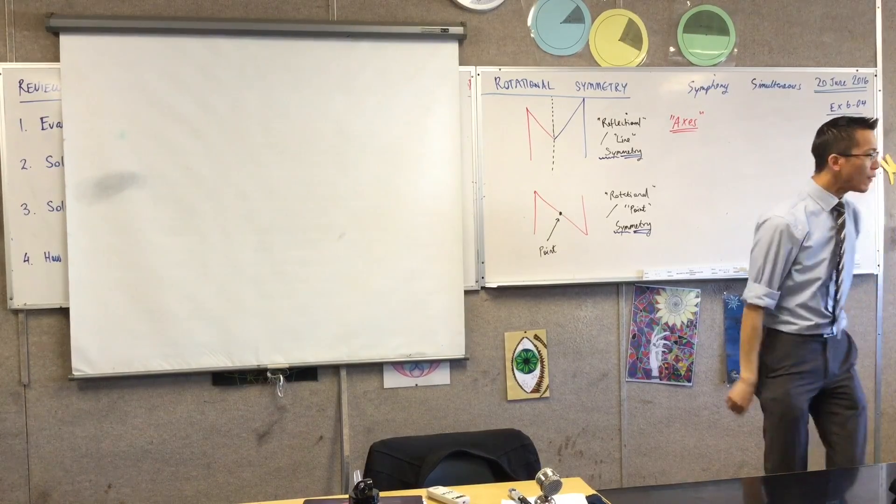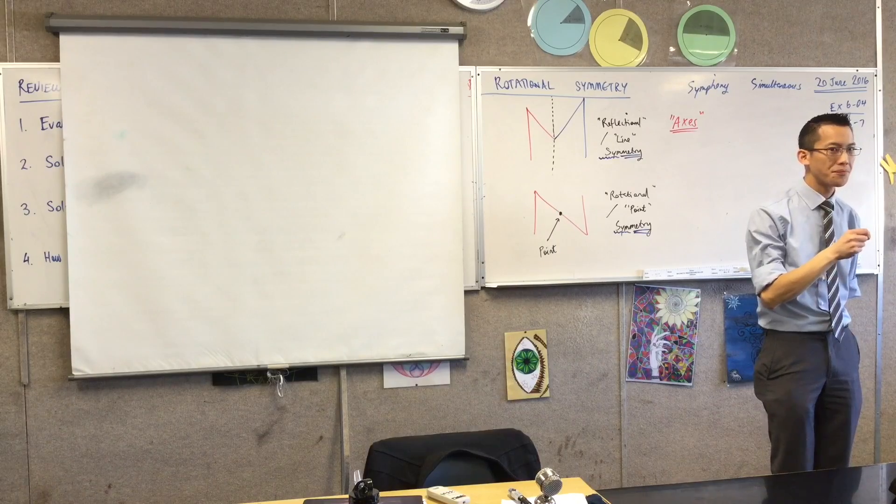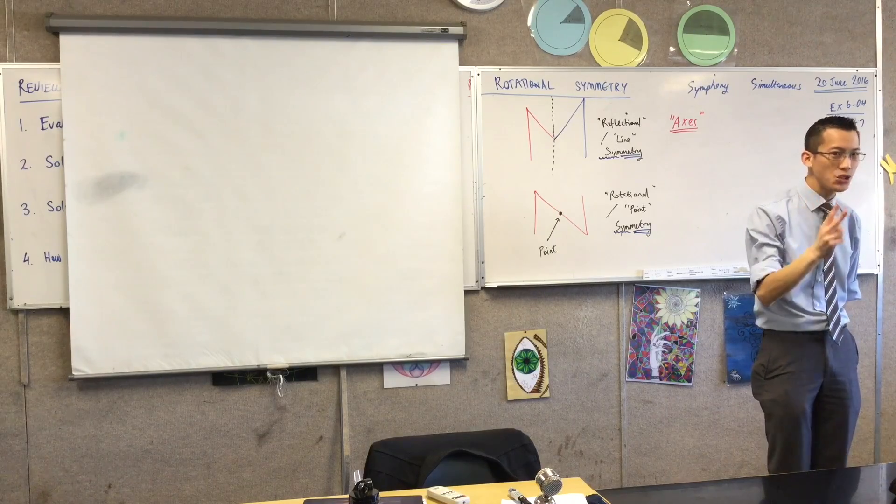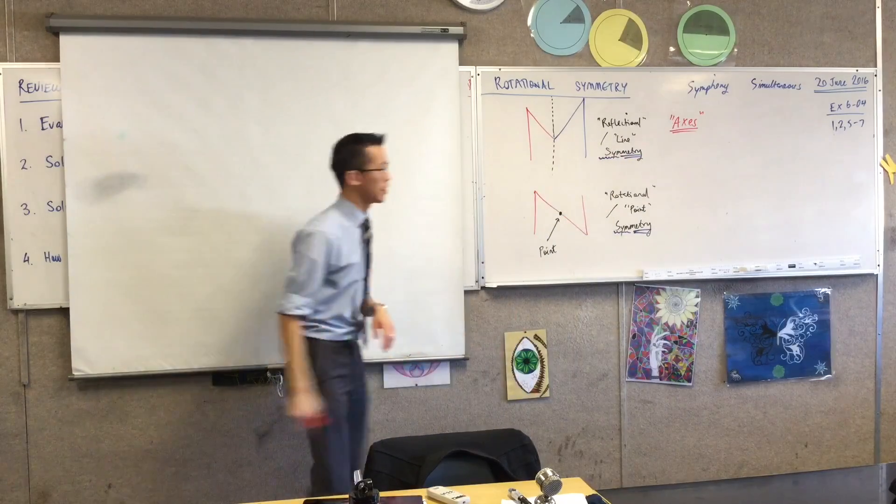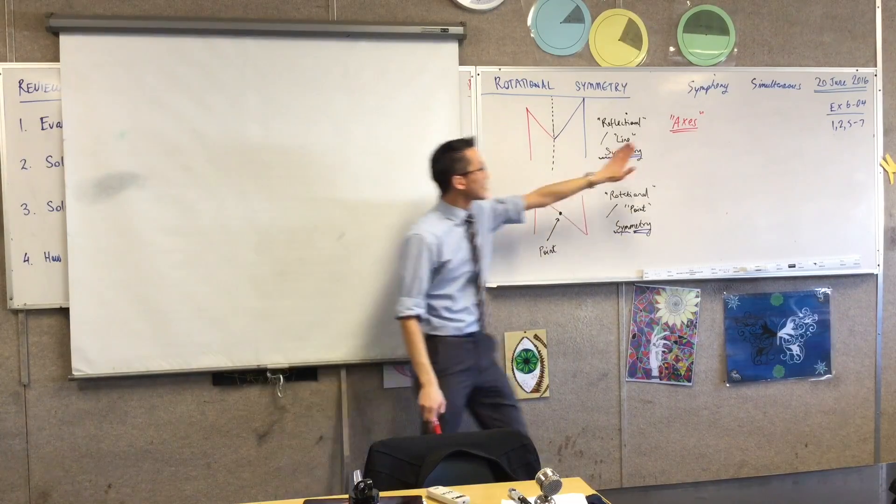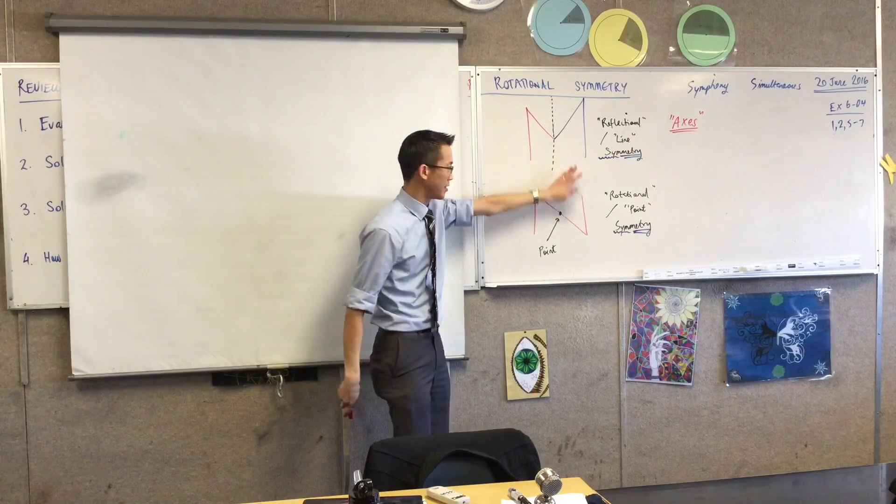That one, do you notice, it's got more than one axis of symmetry. How many has it got? It's got at least two, maybe four, right? So, okay, turn to the front again. The more axes of symmetry something has, the more reflection of symmetry it has.